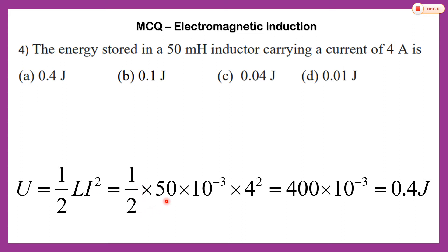Half into L value of 50 millihenry — that is 50 × 10 to the power minus 3 henry — multiplied by current squared, which is 4 squared. We get 400 × 10 to the power minus 3, which is 0.4 joule. So the answer is option A: 0.4 joule.